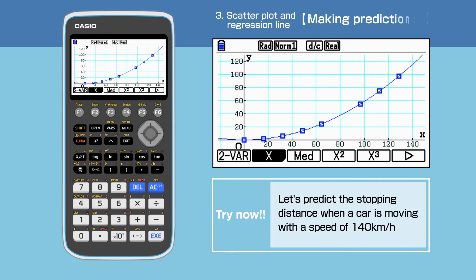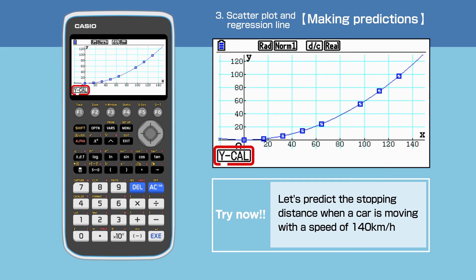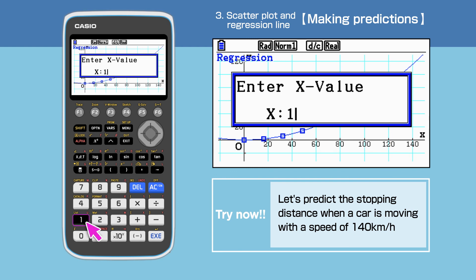Lastly, using this graph, we will predict the stopping distance for a given speed. Press Shift to access the command menu, then select F5, G-Solve. Press F1 to choose Y calc and enter 140.